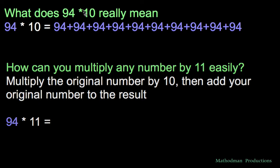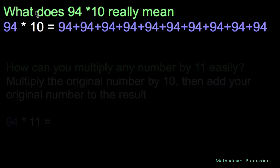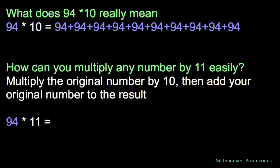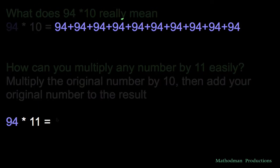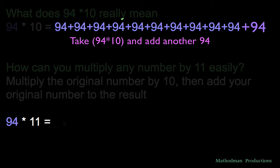For instance, let's take 94 times 10. 94 times 10 means you're just taking that number 94 and you're adding it to itself 10 times. Now taking that into consideration, we can relate it to how to multiply by 11 easily. Because if you take 94 times 11, all you're really doing is adding 94 to itself 11 times. That means it's just one more than 94 times 10.